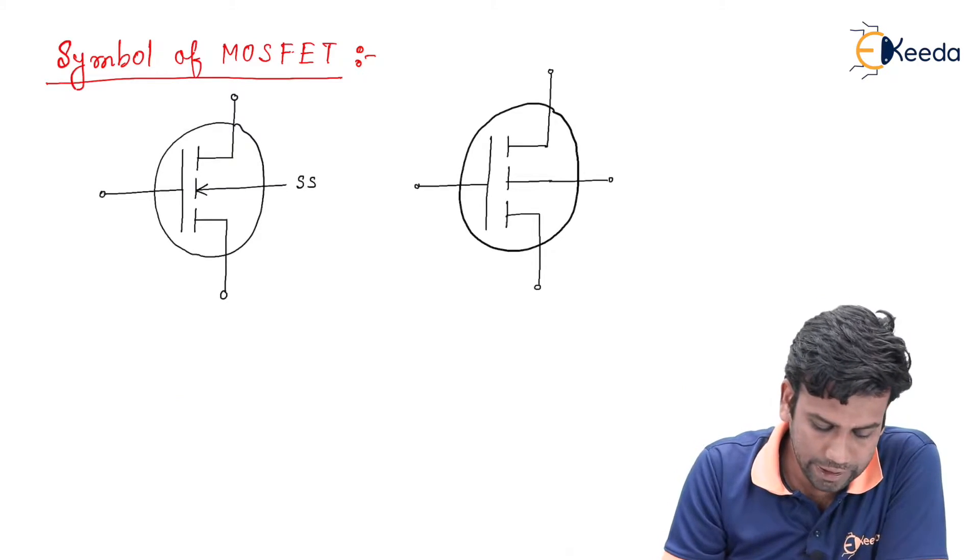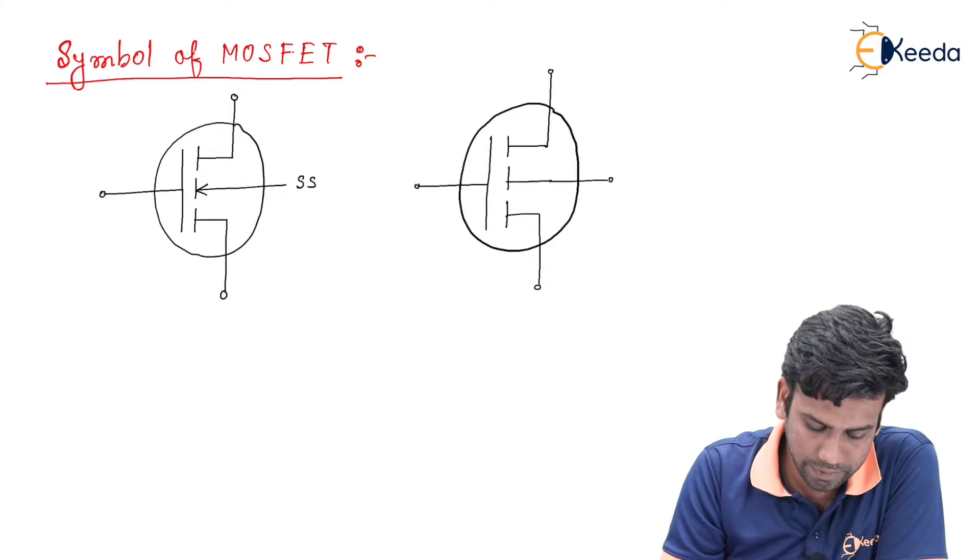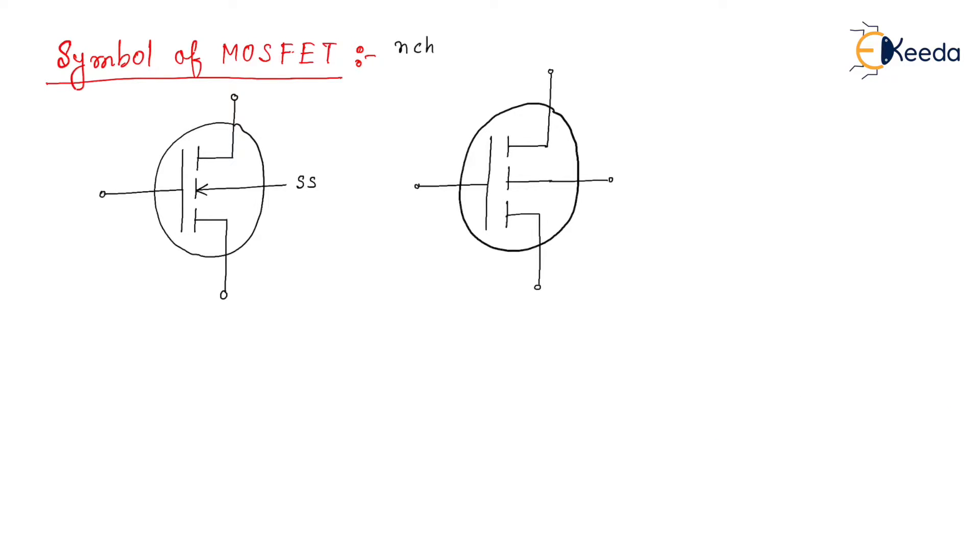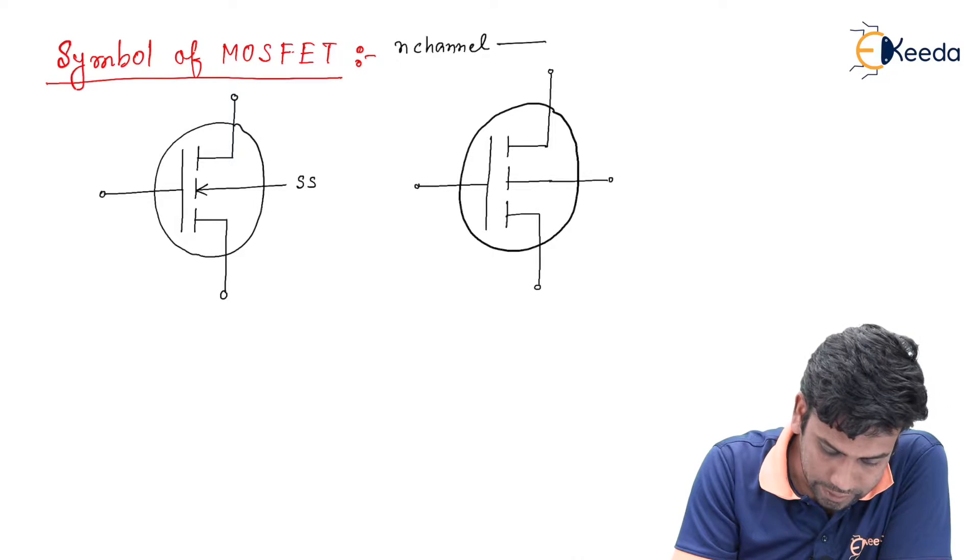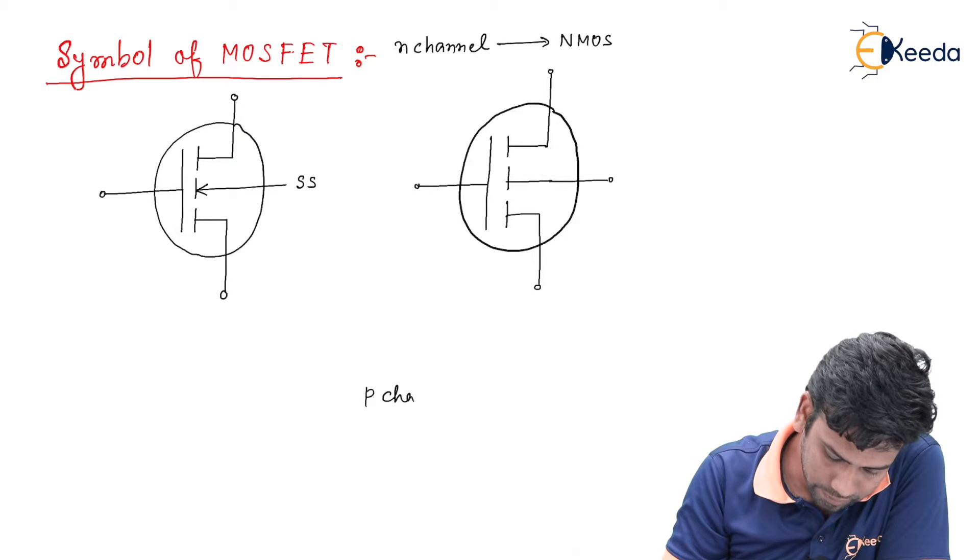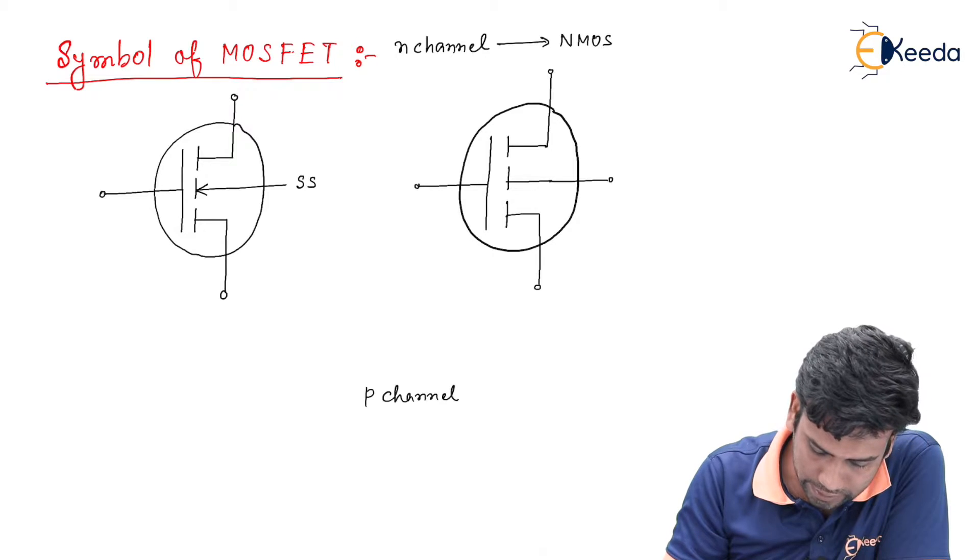We know that E-only MOSFETs are of two types. First one is N-channel MOSFET, that is the N-MOS, and P-channel MOSFET, that is the P-MOS.